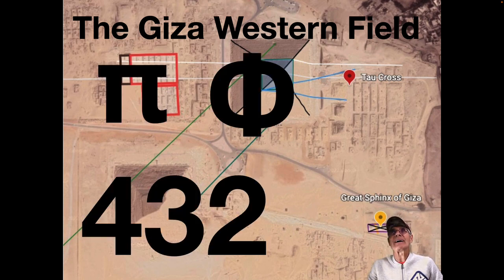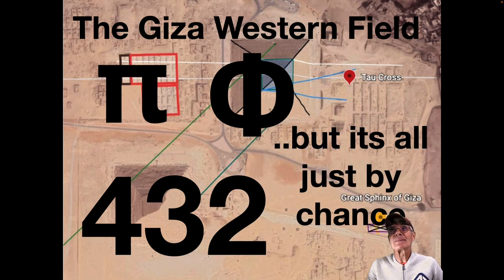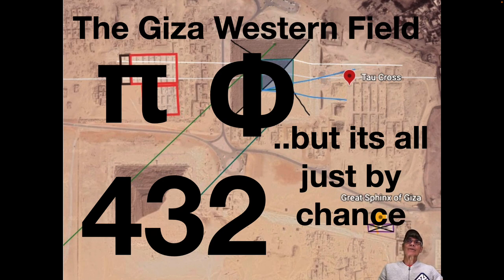Amazing. Let's look a little bit at the relationship of Pi and Phi. Oh yeah, but this is all just by chance, of course, you know. Come on, Egyptologists. See the sacred design.